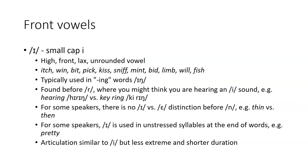In some dialects of English, there is not an E versus I distinction before nasals like N, so their production of thin and then would be the same. For some speakers, I is used in unstressed syllables at the ends of words in common speech, so rather than saying something like pretty, where it's said very clearly, the production might be pretty and have an I-like sound at the end.